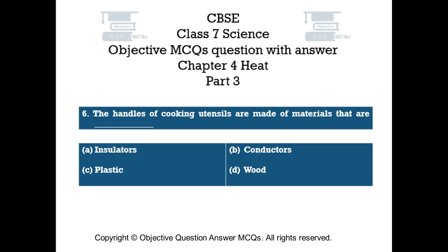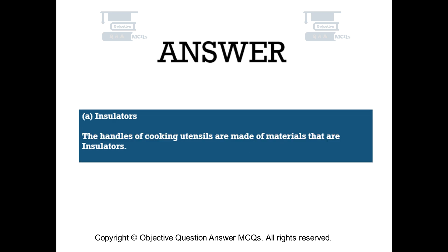Question number 6. The handles of cooking utensils are made of materials that are: Option A insulators, Option B conductors, Option C plastic, Option D wood. The right answer is Option A — insulators. The handles of cooking utensils are made of materials that are insulators.